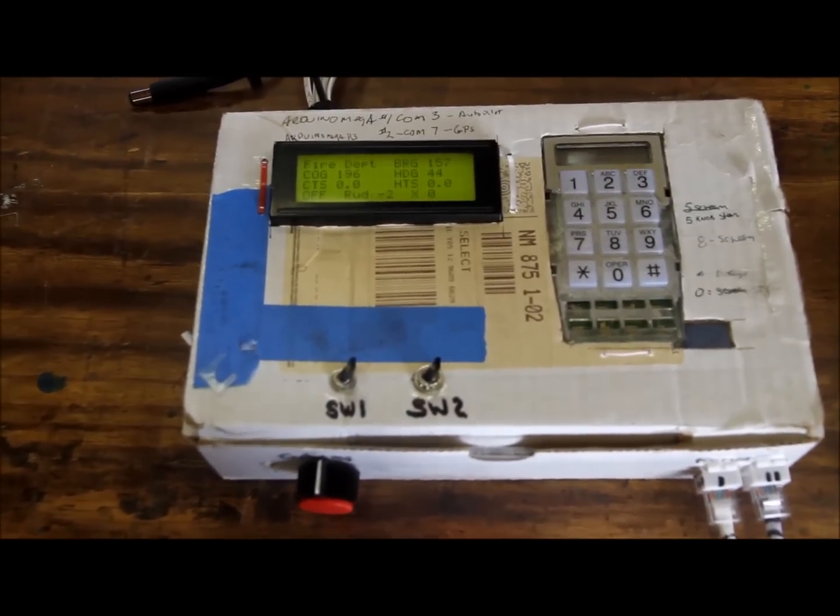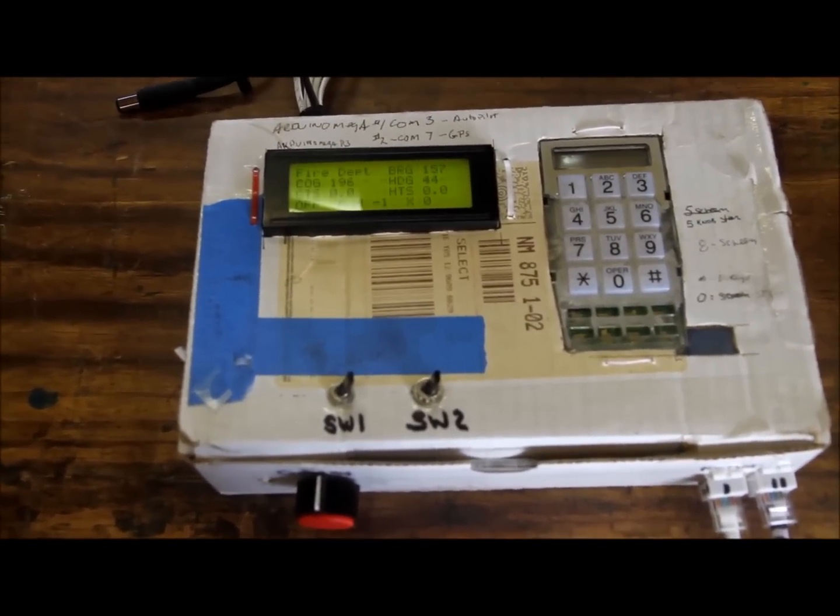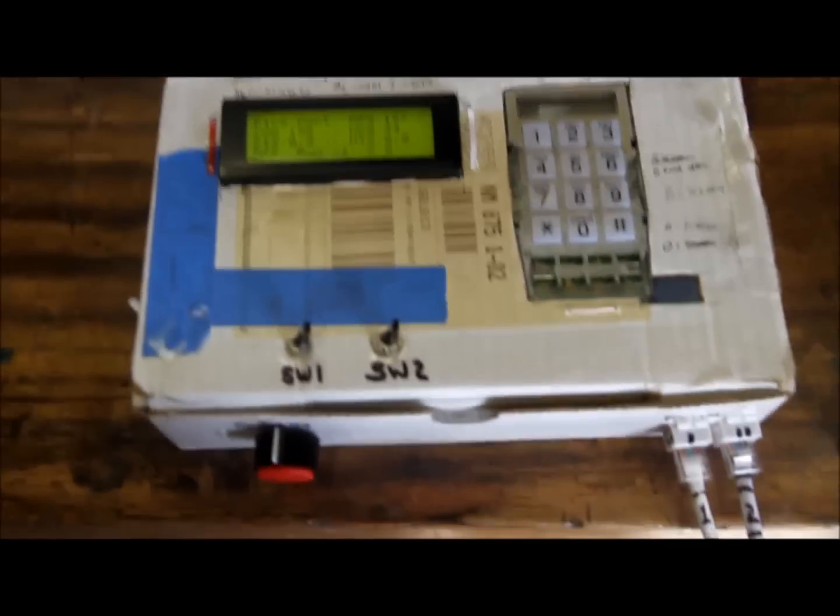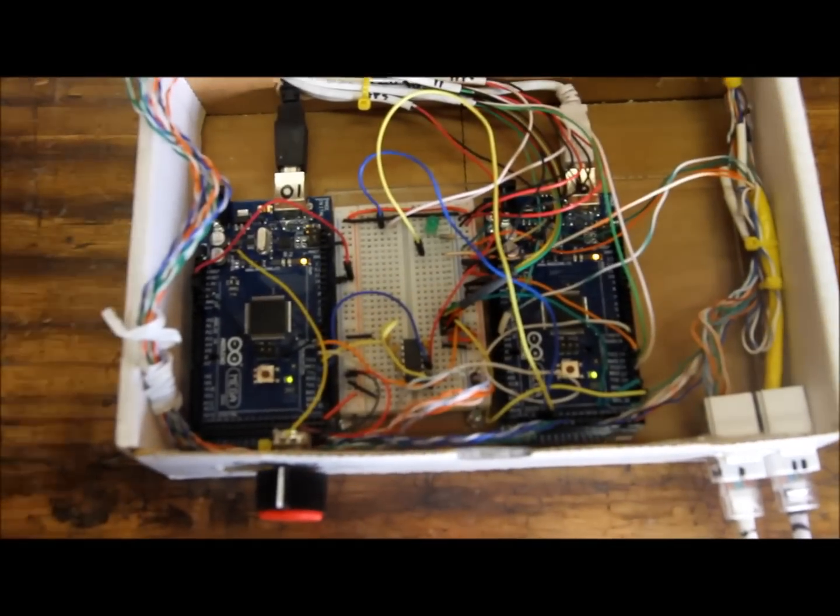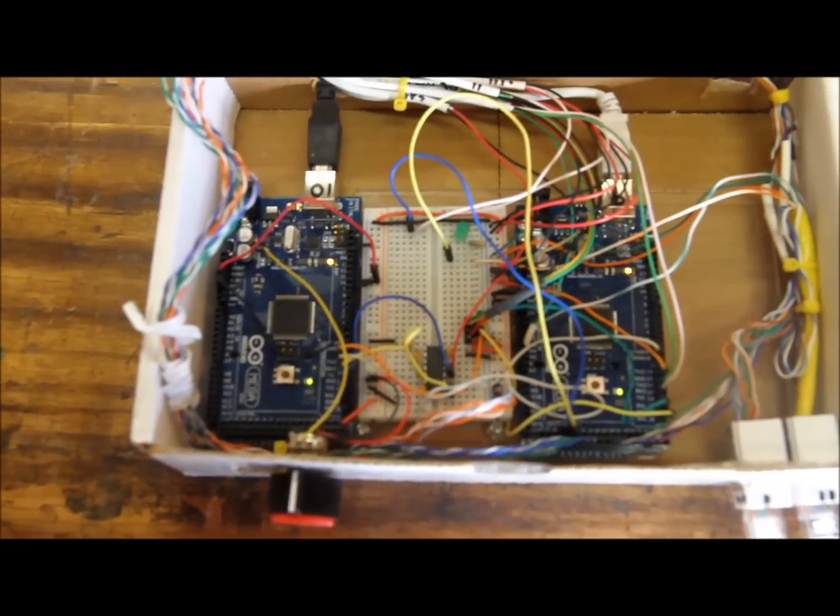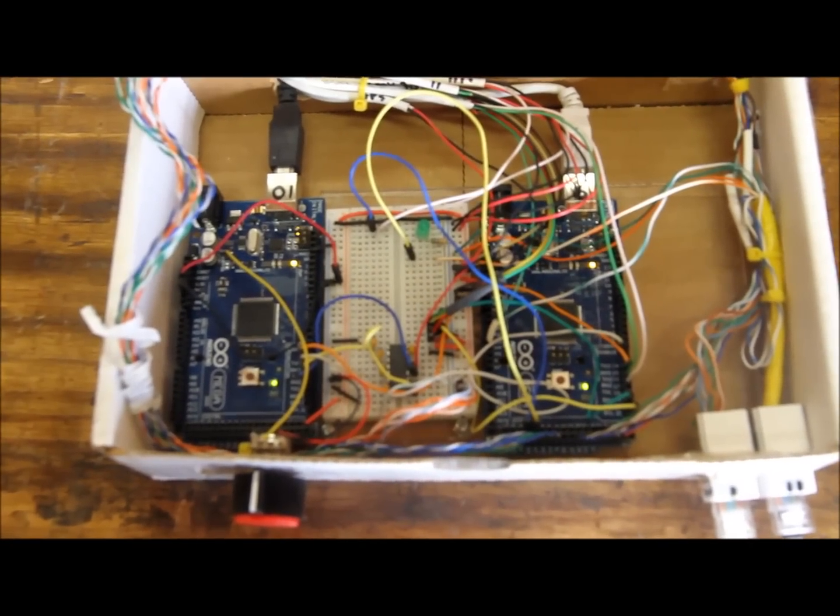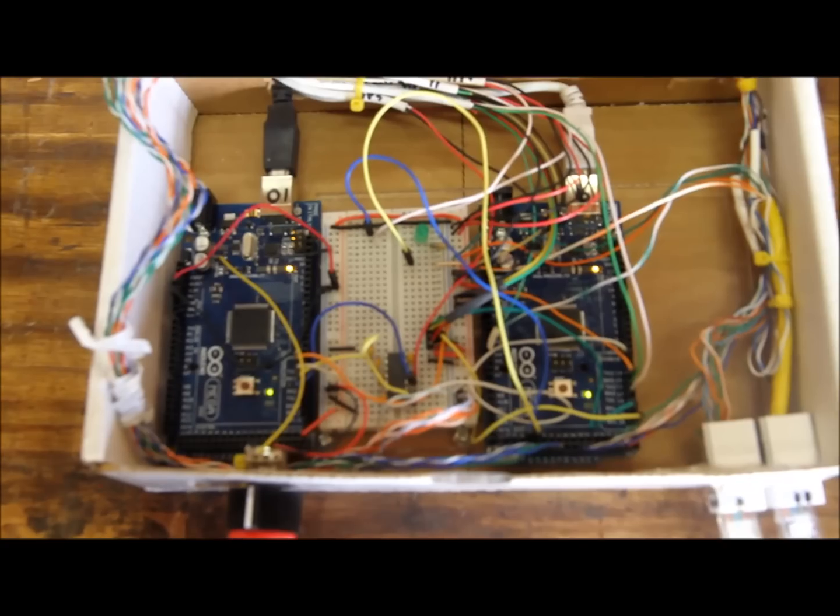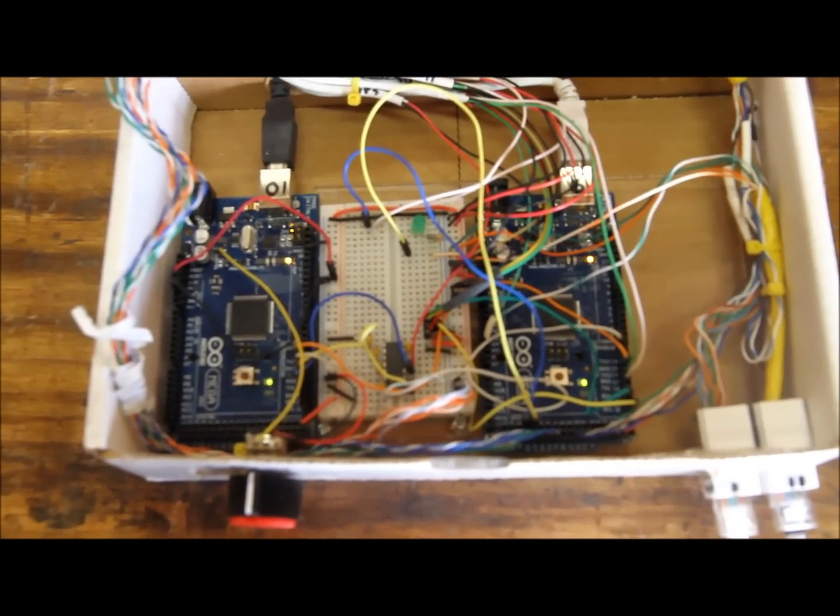Now what you see in front of you is the control module, a little funky there in a cardboard box. Inside here are two Arduino Mega. I bought each of those recently on Amazon for about $35 a piece.